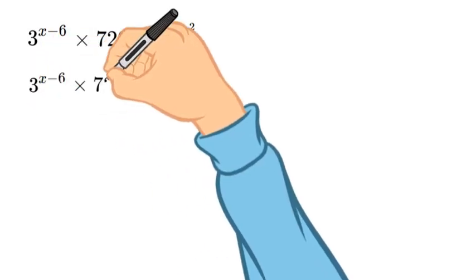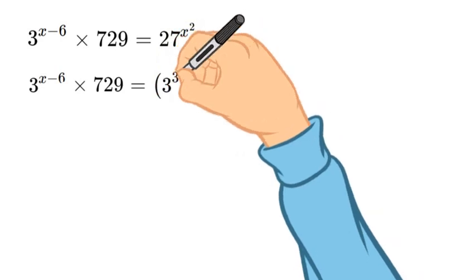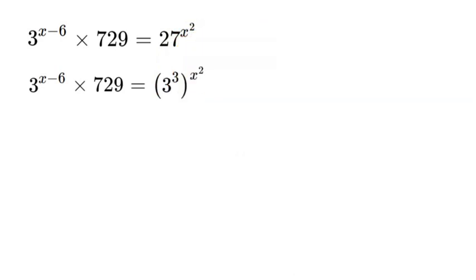So the first step we're going to do here is to rewrite 27 as 3 to the power of 3. You'll see in a little bit why we're doing that but it'll be easier to work with it having the same base as other numbers in the equation.